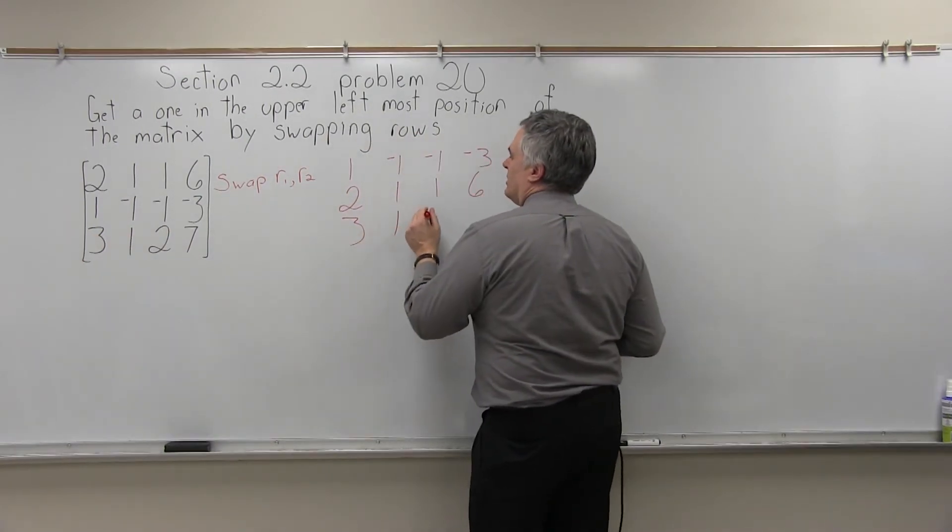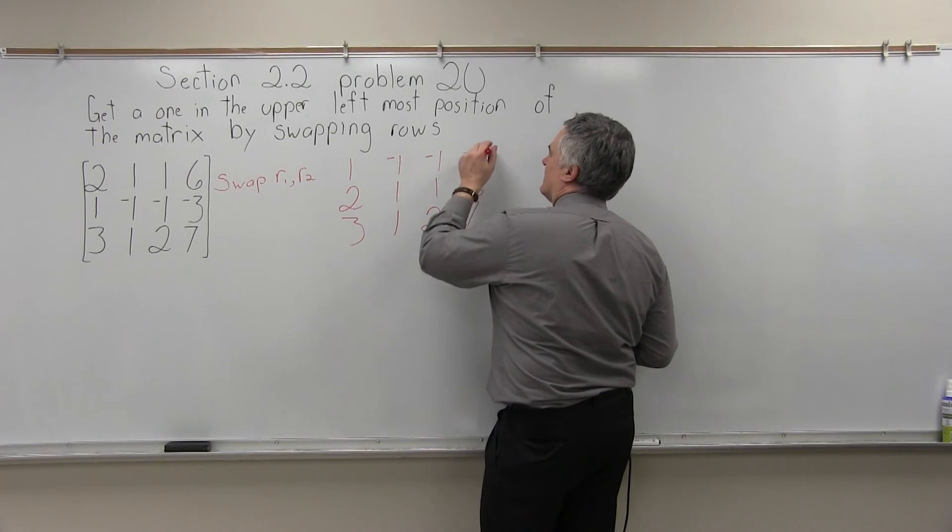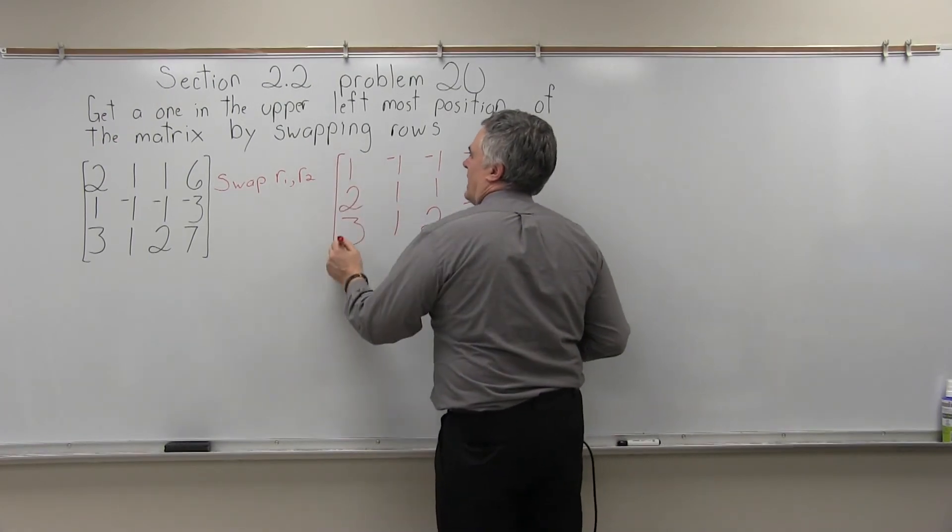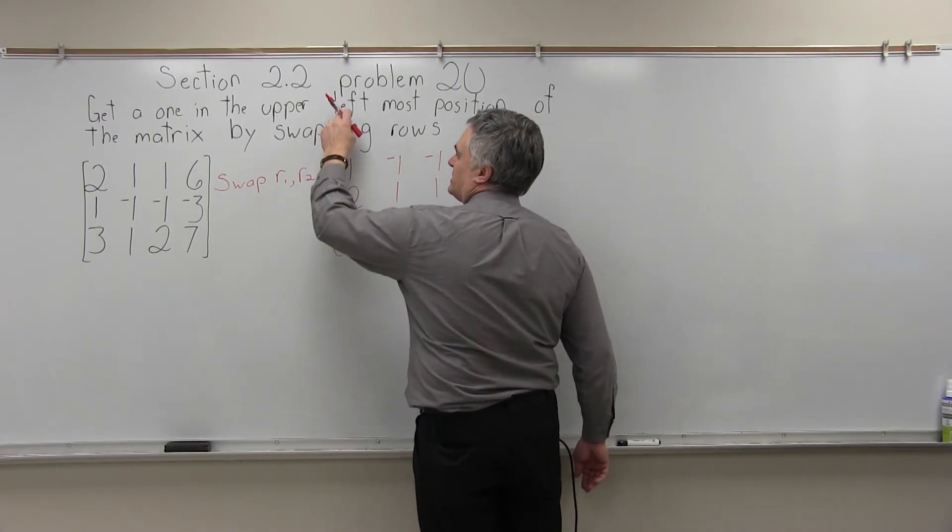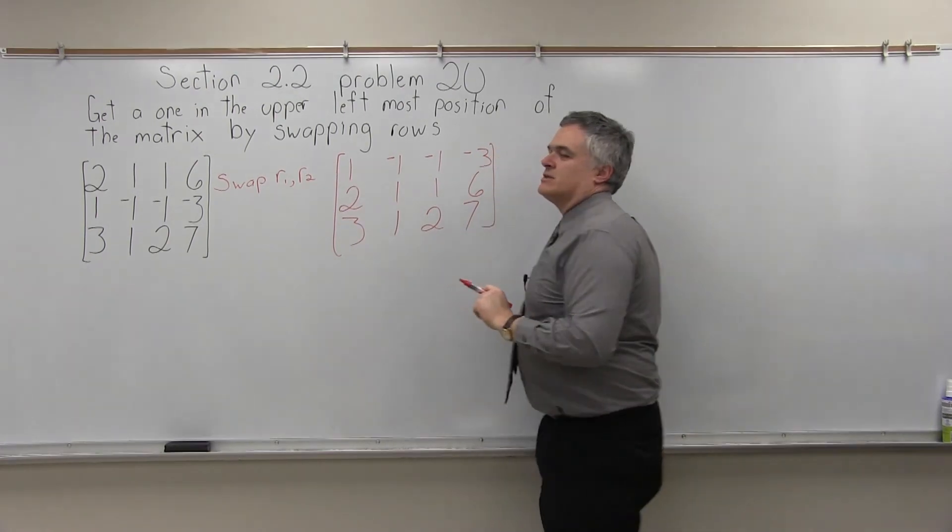3, 1, 2, 7. And now we have a 1 in the upper leftmost position of the matrix, and we did it by swapping rows.